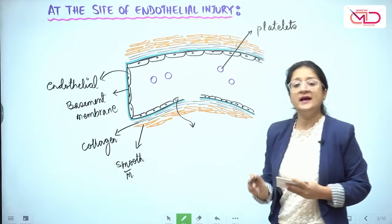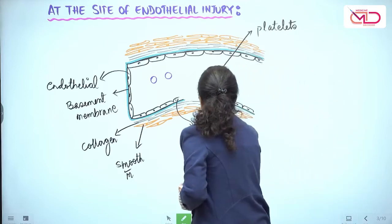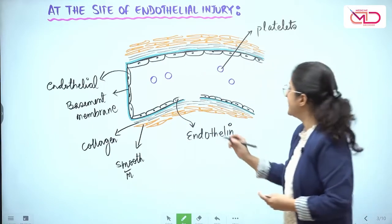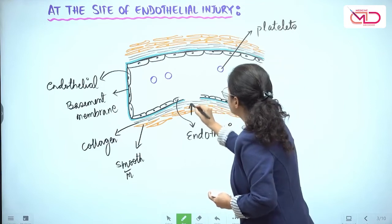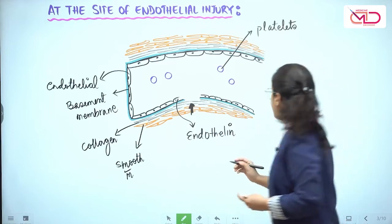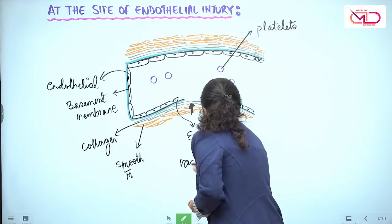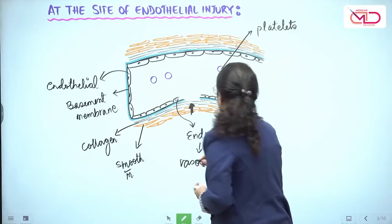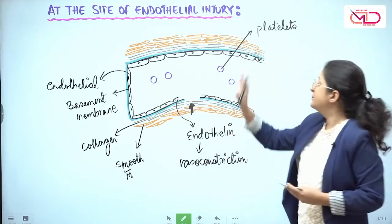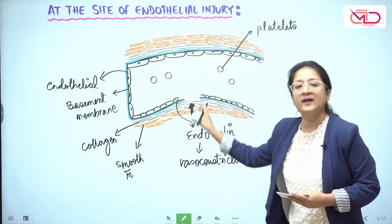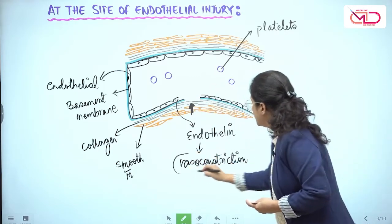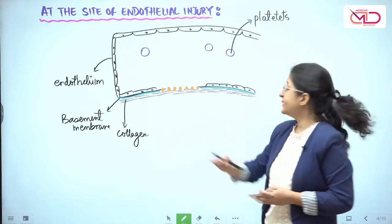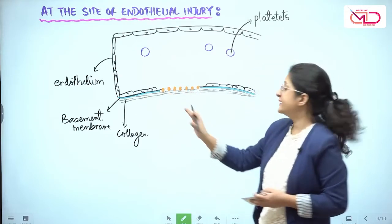Immediately at the site of endothelial injury, the endothelial cells release a factor called endothelin. Endothelin acts on the nearby smooth muscle cells and causes vasoconstriction, limiting the blood flowing in that area. The focus whenever there is injury is on plugging the hole and reducing blood loss from that site. So there is local vasoconstriction.